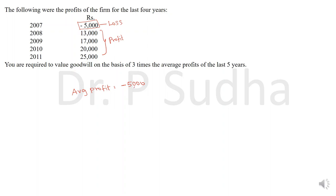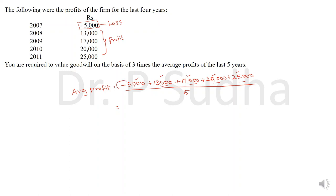Average profit equals minus 5,000 plus 13,000 plus 17,000 plus 20,000 plus 25,000, divided by 5. When adding the numerator, you add 13,000, 17,000, 20,000, and 25,000, then deduct 5,000 because it is a loss. The total is 70,000 divided by 5, giving an average profit of 14,000.